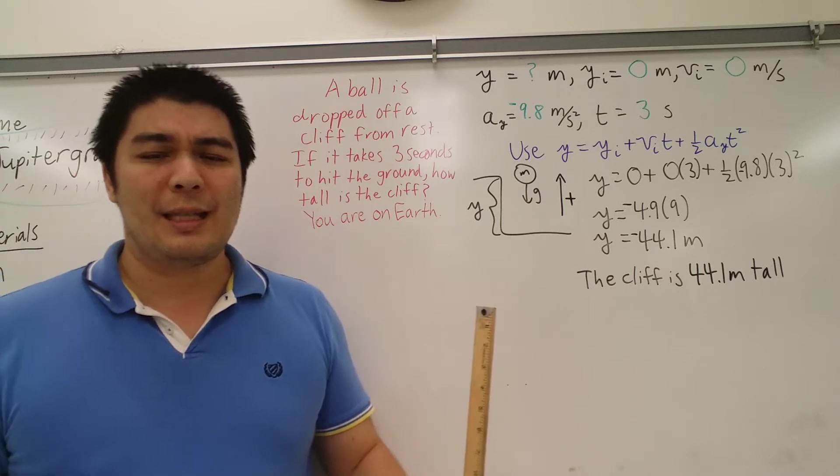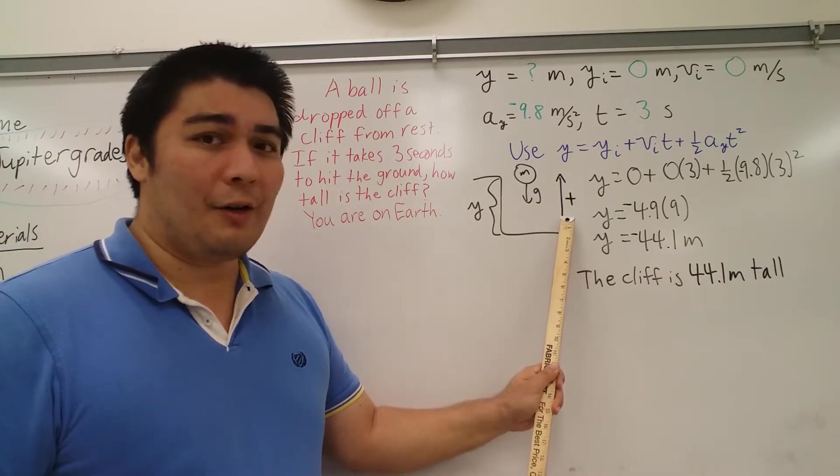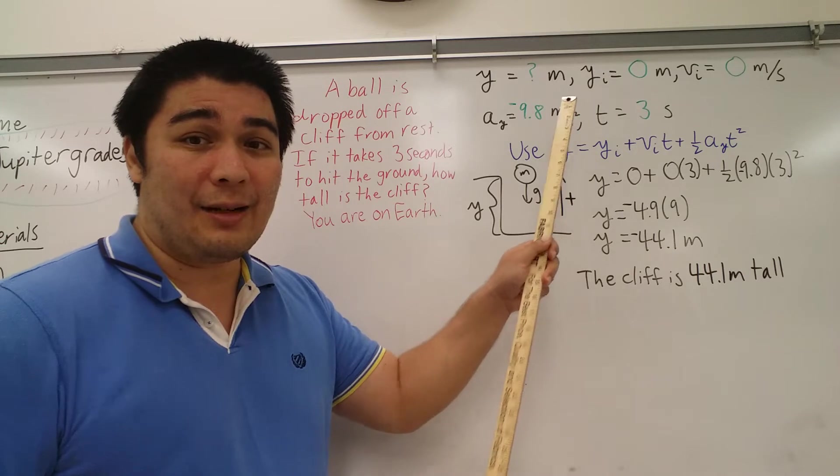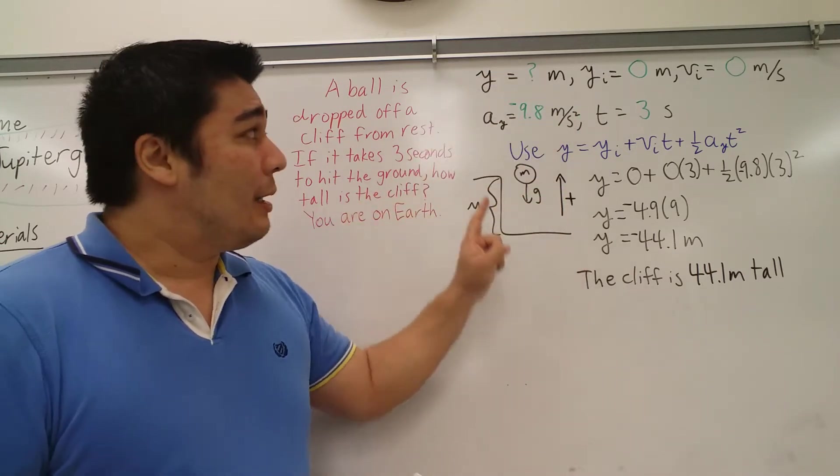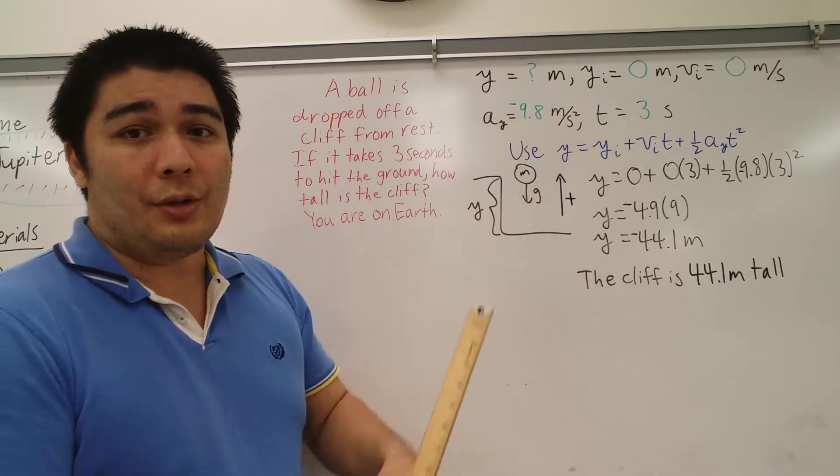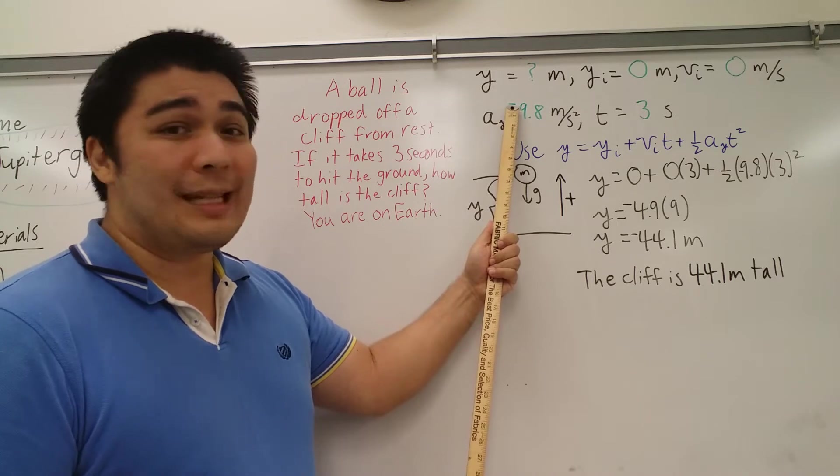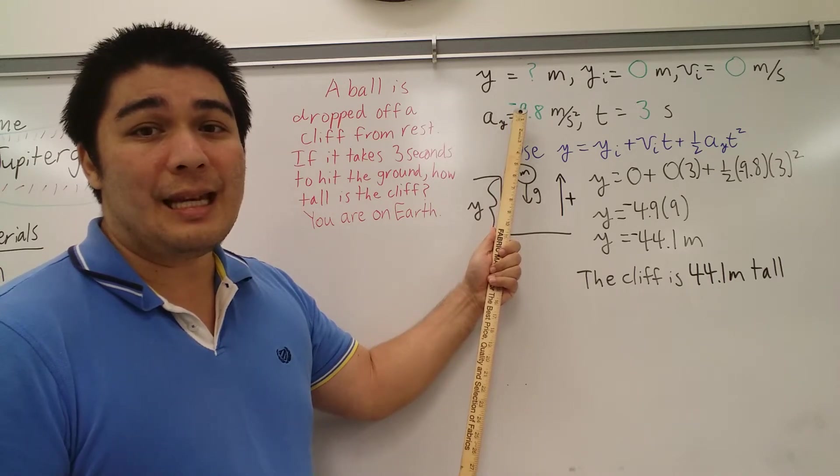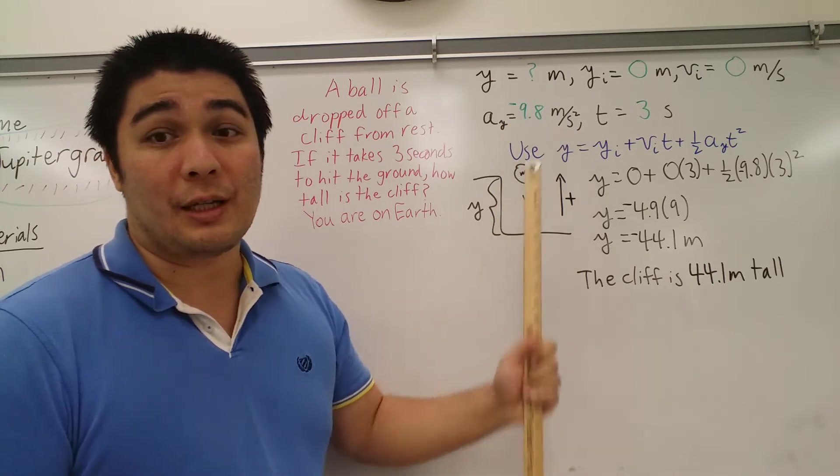Everything else is the same. However, because this direction of positive is now up instead of down, the acceleration due to gravity, if you'll notice right here, is now negative. It is negative 9.8 meters per second squared.